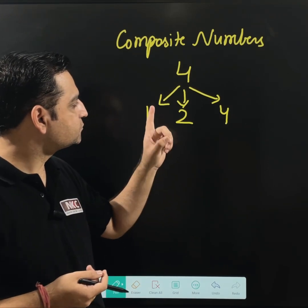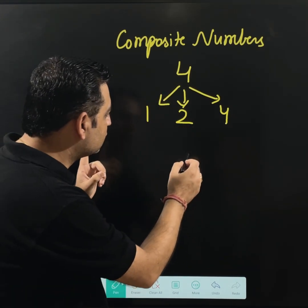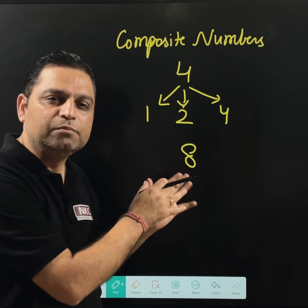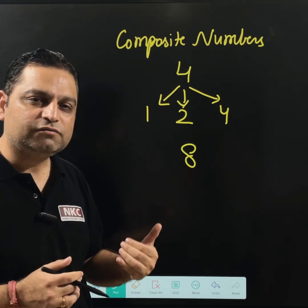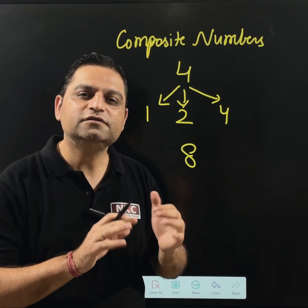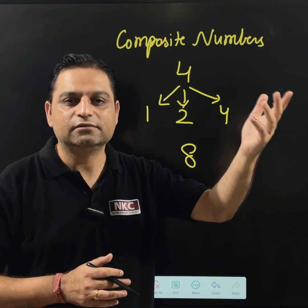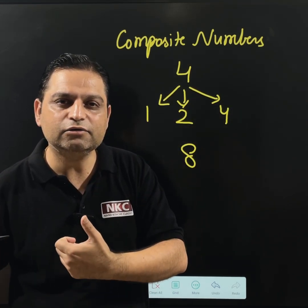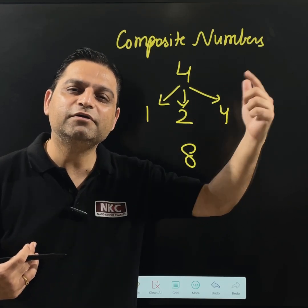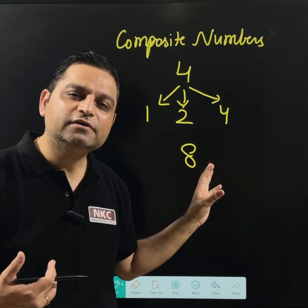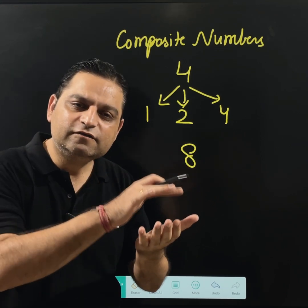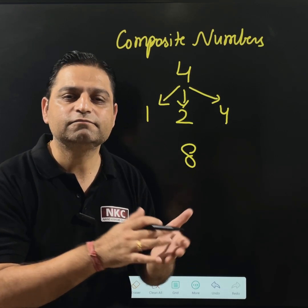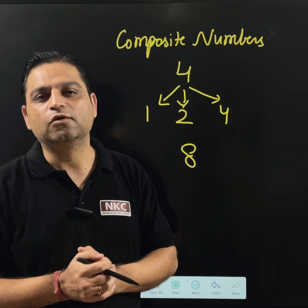Now, if I talk about 8, is it prime or composite? This is a composite number. In easy words, a number which is divisible by any other number as well other than itself. For example, 8 is divisible by 8, but it can also be divided by 4 and by 2 — so 8 is a composite number. 12 is divisible by 12, but it can be divided by 2 and by 6 — so 12 is always a composite number.